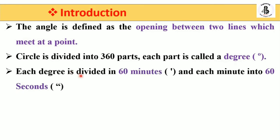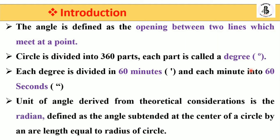Each degree is divided into 60 minutes, and each minute is further divided into 60 seconds. This is the standard used for indicating the angles of your object or two parts. The unit of angle derived from theoretical considerations is the radian.